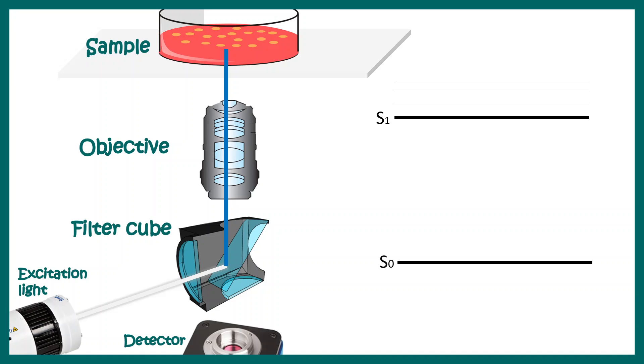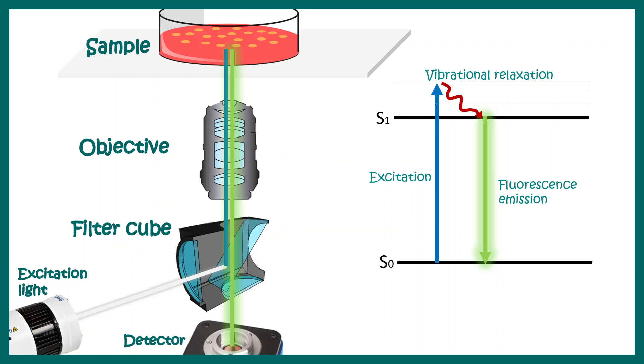Inside the specimen, there are fluorophores, so they would be excited and the electrons would jump from ground state to the excited state. Eventually, they would be relaxing and ultimately leading to the emission of fluorescence. The fluorescence light also travels through the objective, passes through the dichroic mirror and ultimately gets collected to the detector or forms the image in our retina in case we are visualizing it with our eyes.